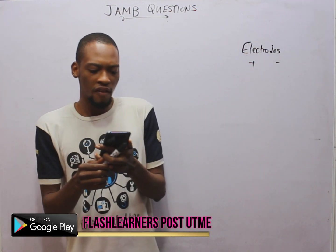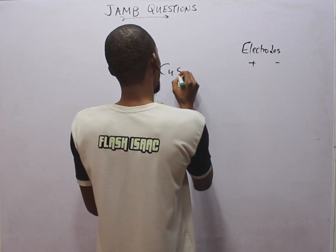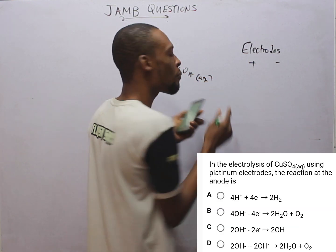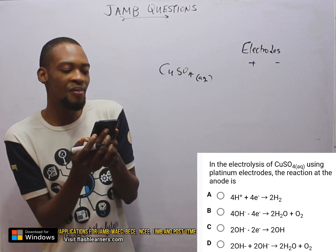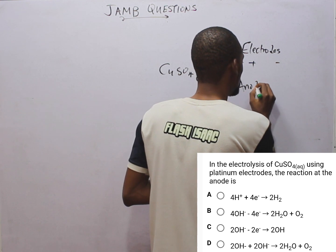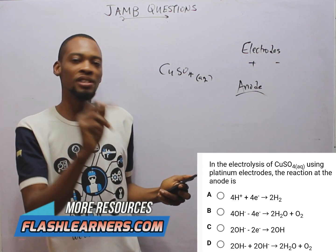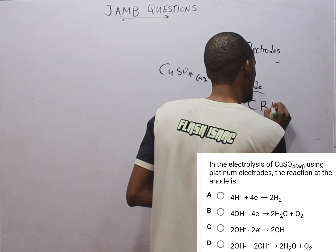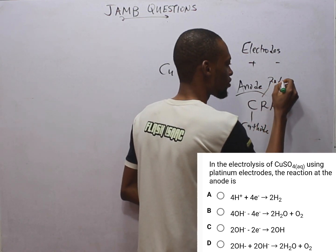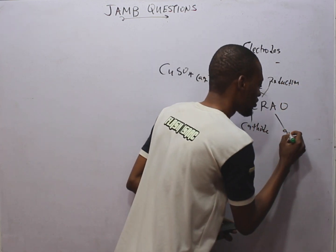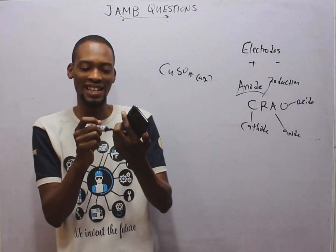Let us begin. The first question says: in the electrolysis of copper sulfate, CuSO4 aqueous — copper tetraoxosulfate VI aqueous — using platinum electrodes, the reaction at the anode is what? Now, what type of reaction takes place at the anode? The mnemonic: cathode means reduction. Reduction takes place at the cathode while oxidation takes place at the anode.